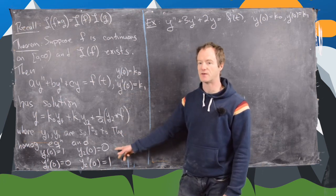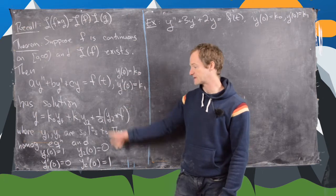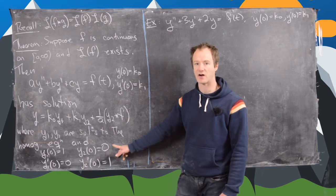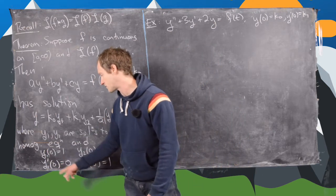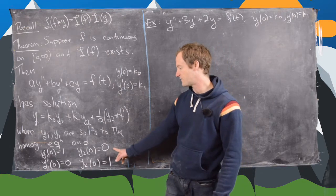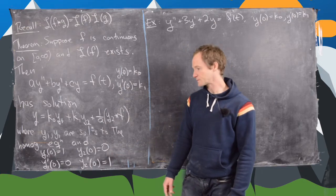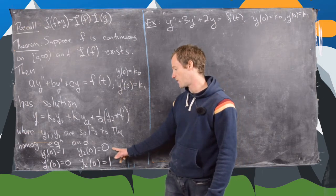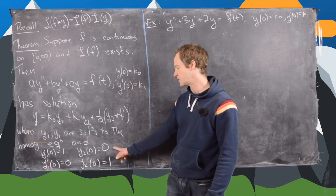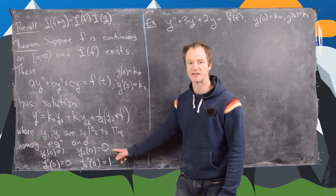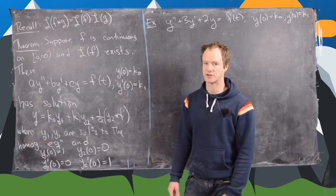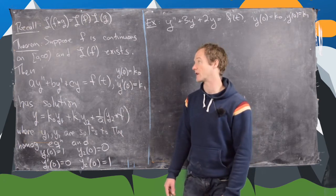If you look back at the previous video and the proof of this theorem, we relied on this fact very heavily. So we have y1 evaluated at 0 is 1, y1 prime evaluated at 0 is 0 and then vice versa for y2. So you can think of this as like an orthogonal basis of unit vectors for solutions to the corresponding homogeneous differential equation if you want to put it in the terms of linear algebra.